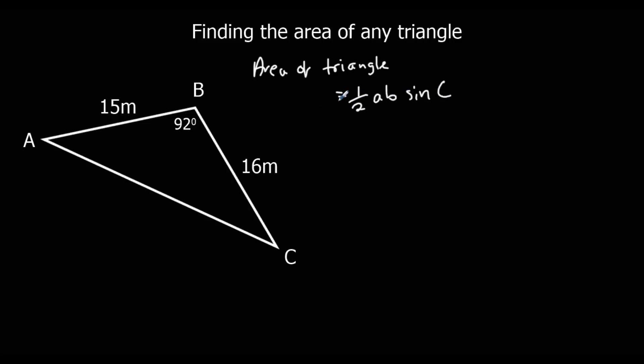And this works for any triangle. So it's half times a times b, sin C. So what we need is an angle and two lengths next to it.